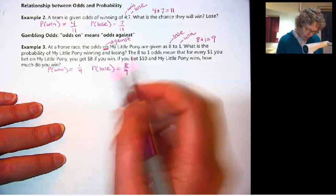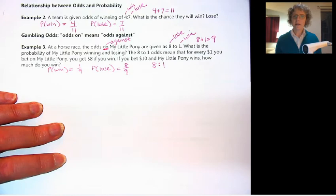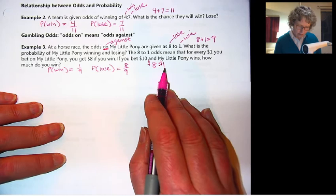So if you bet $10 and my little pony wins, how much do you win? Let's look at the ratio here. We've got eight to one. You can think of that in terms of money also. Think of that as eight dollars to one dollar. So for every one dollar you bet, if my little pony wins, you get a return of eight dollars.